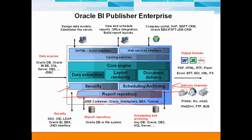Then you have the OBI Core Engine. The OBI Core Engine consists of data extraction logic, which extracts data from different sources. It handles layout rendering — depending on the user request, it can render into PDF, Word, HTML, XLS, and different formats. Finally, there is document delivery in terms of bursting reports via email, shared web folder, and similar channels.